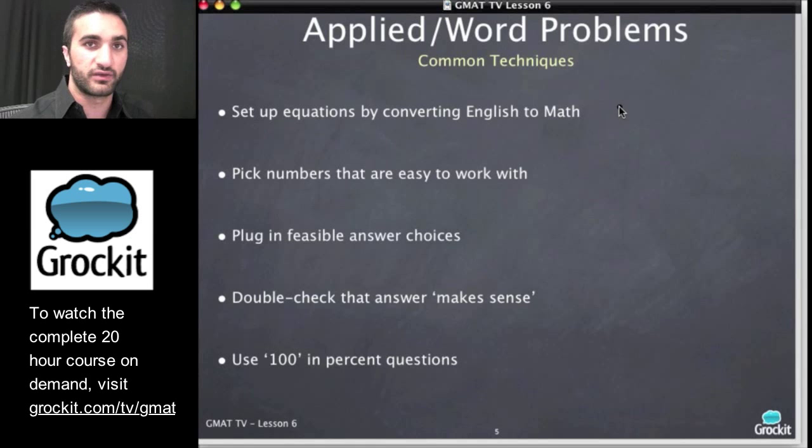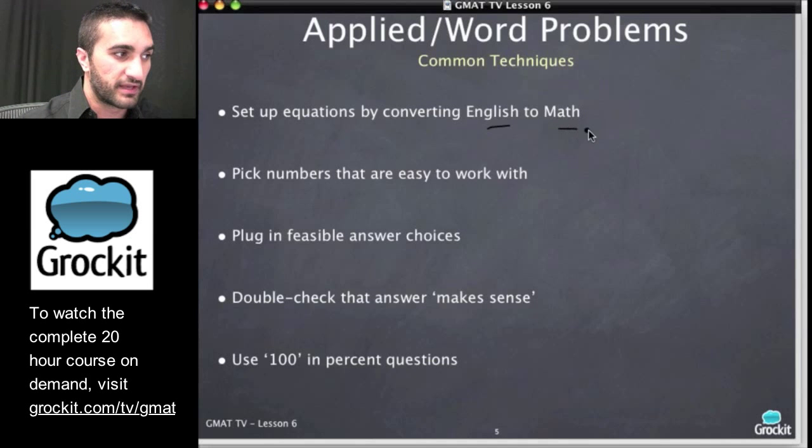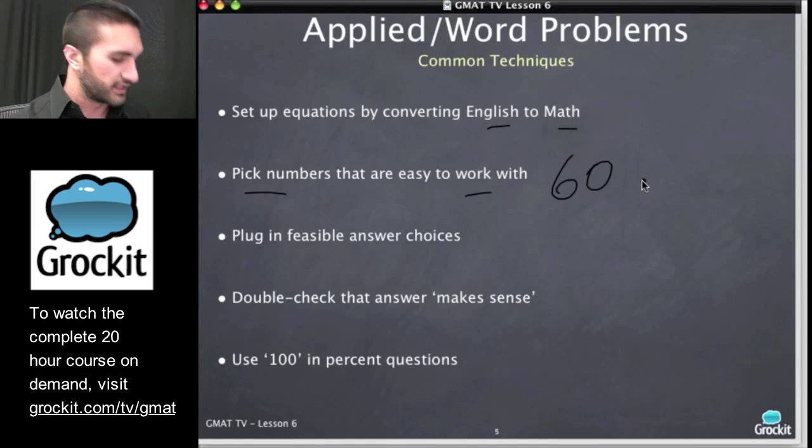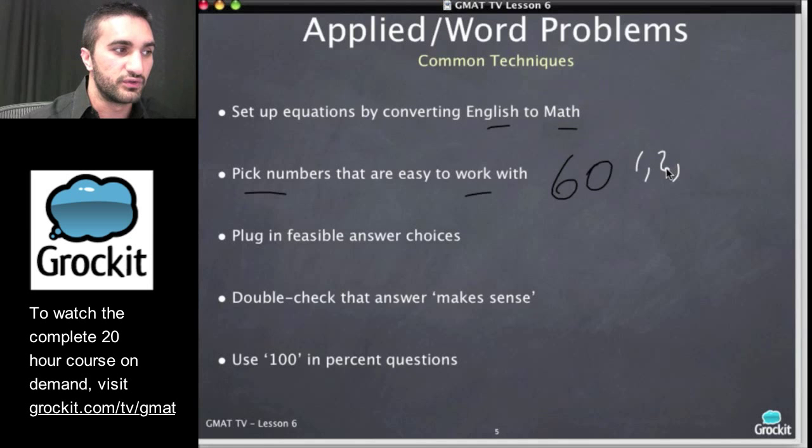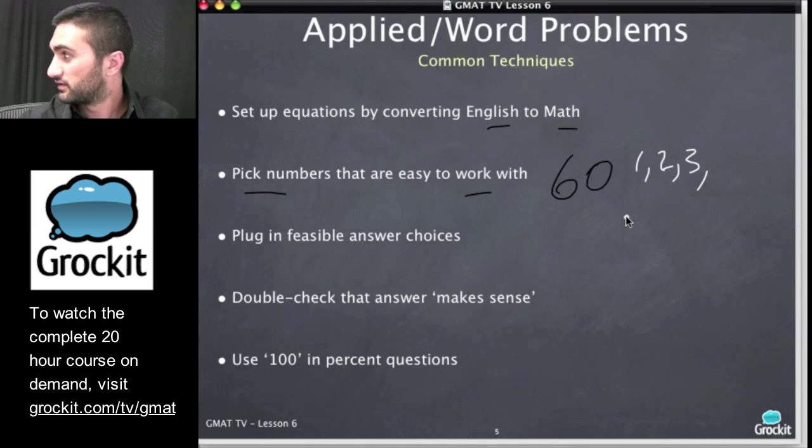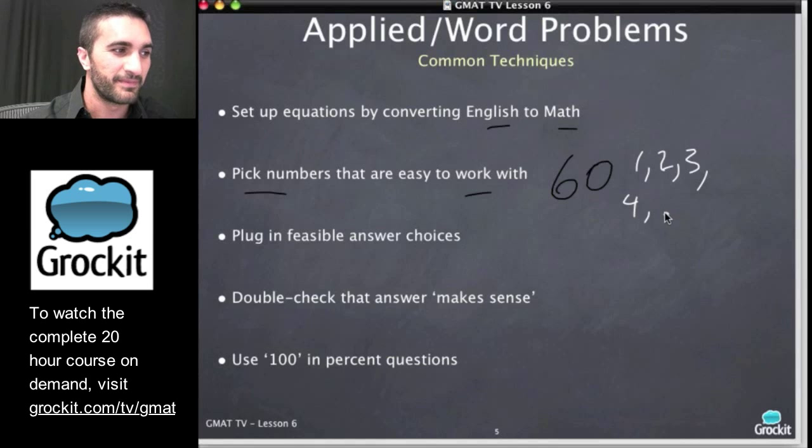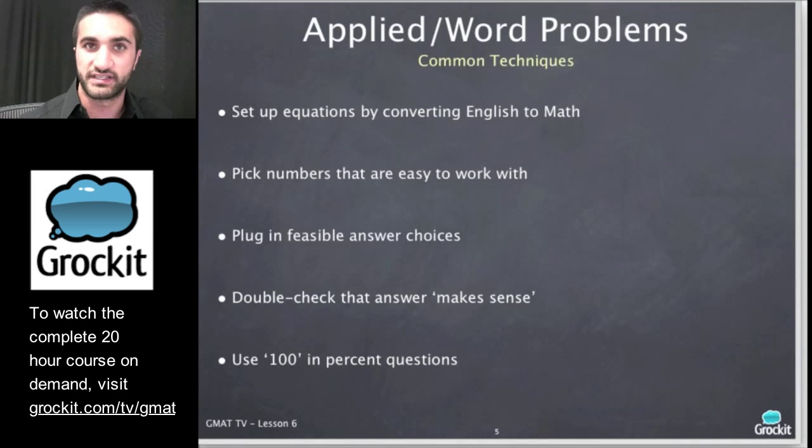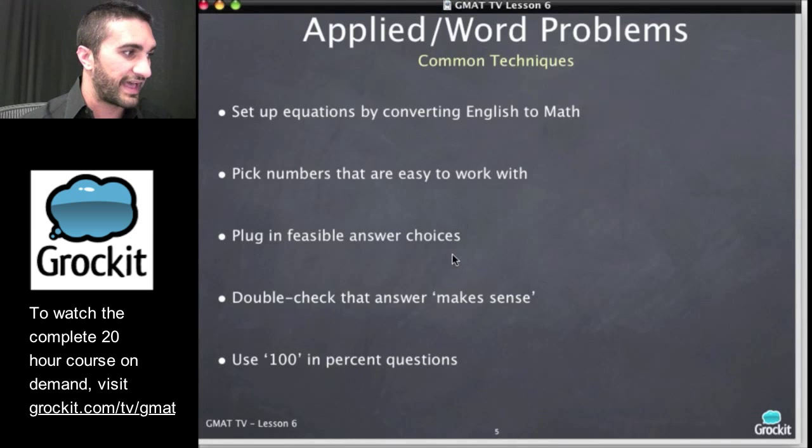A few more common techniques that we're going to see today: setting up equations by converting English to math, which we just did. Pick numbers that are really easy to work with. 60 is a good number that we can use a lot of times on the GMAT. Does anyone know why I pick 60? It's because it's divisible by what numbers? You can do 1, 2, 3, can we do 4? 4 times 15, nice. You can do 5, you can do 6. All of these work really nicely, and when we see a lot of fractions on the GMAT like one-third, one-fourth, one-fifth, one-sixth, 60 is a good number to work with on questions like that.